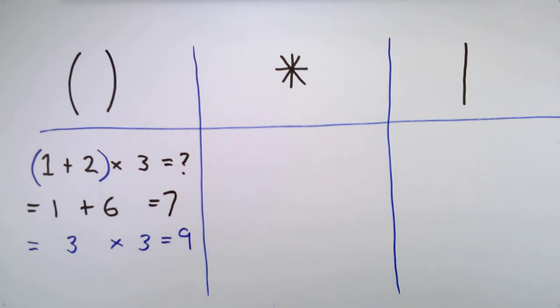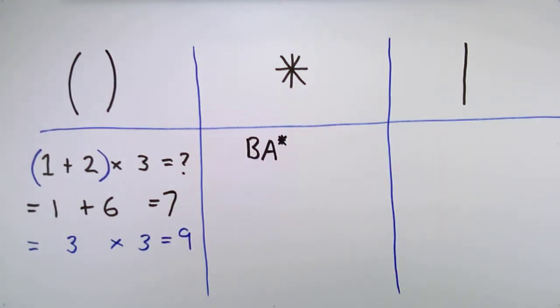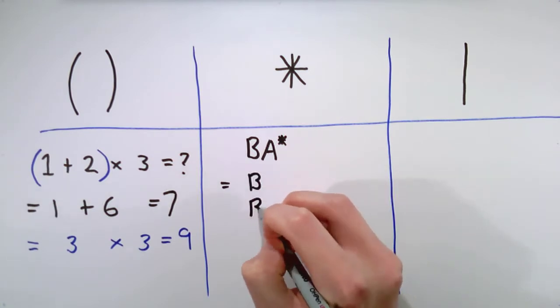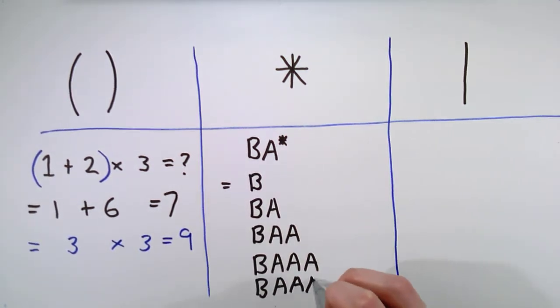Next we have the Kleene star, named after the man who helped found the concept of regular expressions. This matches the preceding symbol repeated 0 or more times. For example, BA star will match B and BA and BAA and BAAA, and so on.